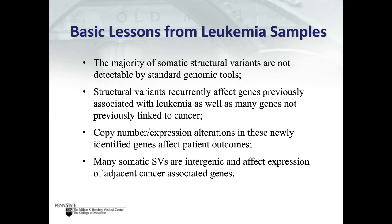The key lessons from the leukemia samples are: the majority of structural variants in leukemia are not detected by standard genomic tools; these SVs recurrently affect genes previously associated with cancer as well as many not previously linked; copy number and expression alterations in newly identified genes affect patient outcomes; and many somatic SVs are intergenic, affecting expression of adjacent genes.